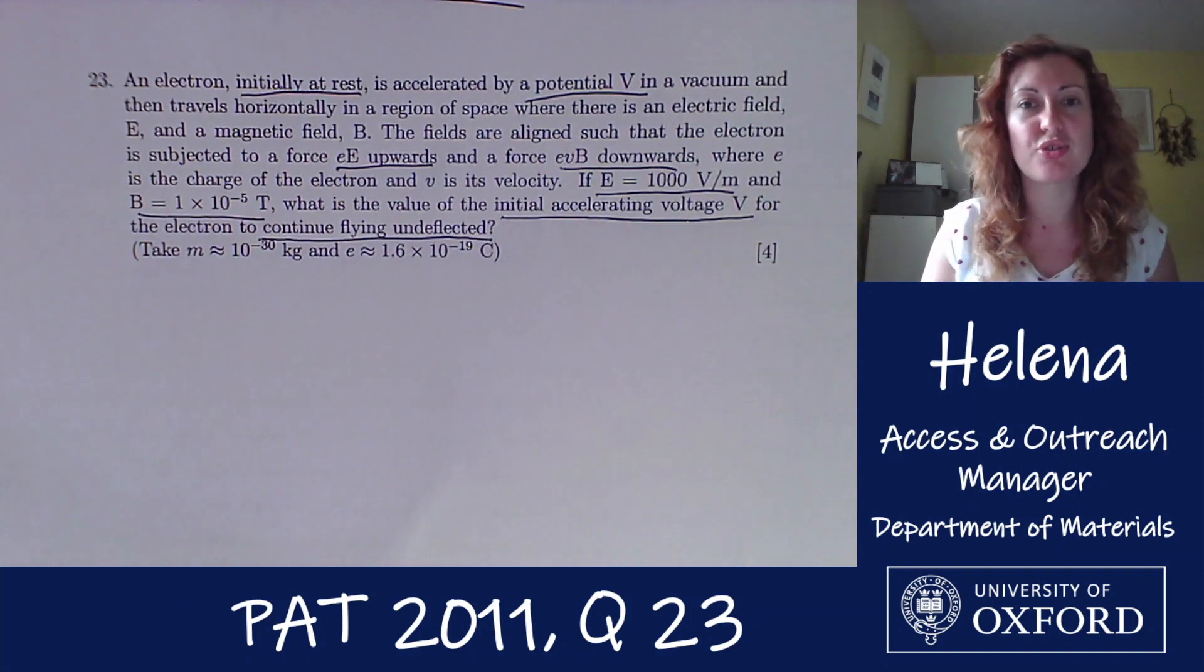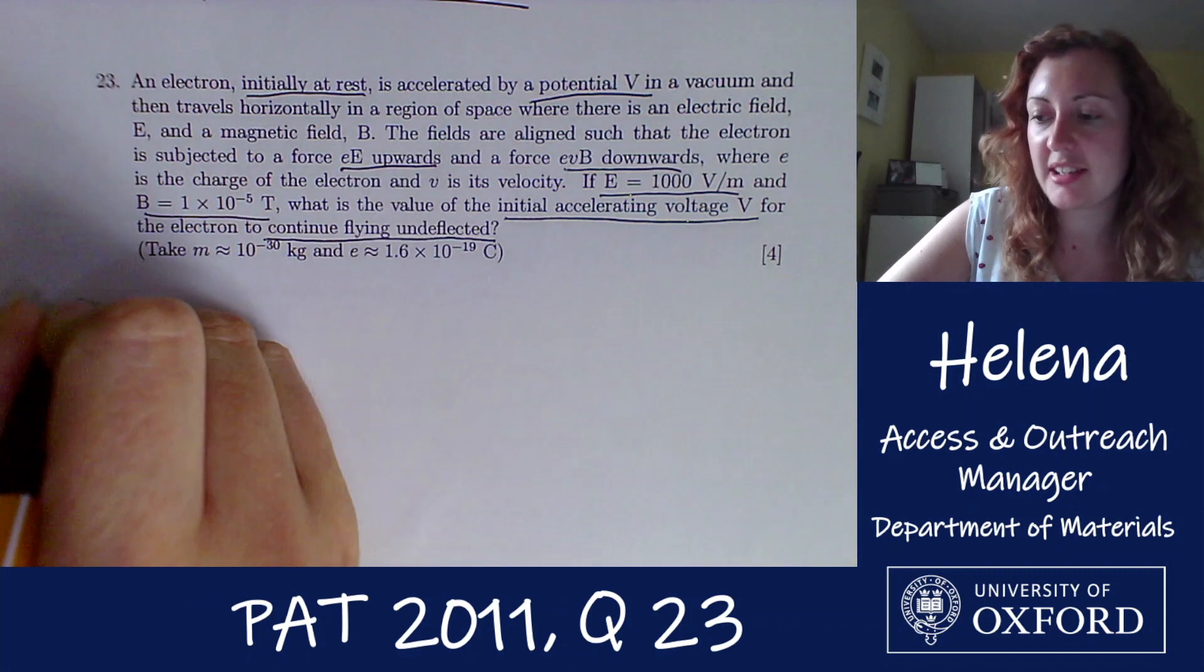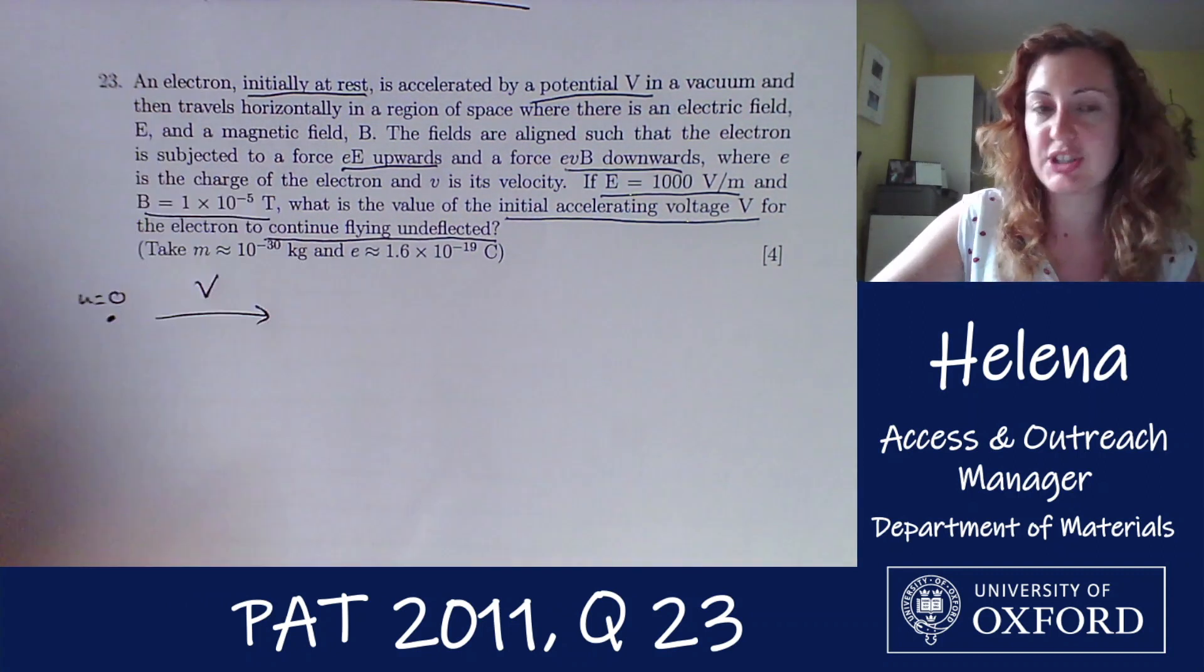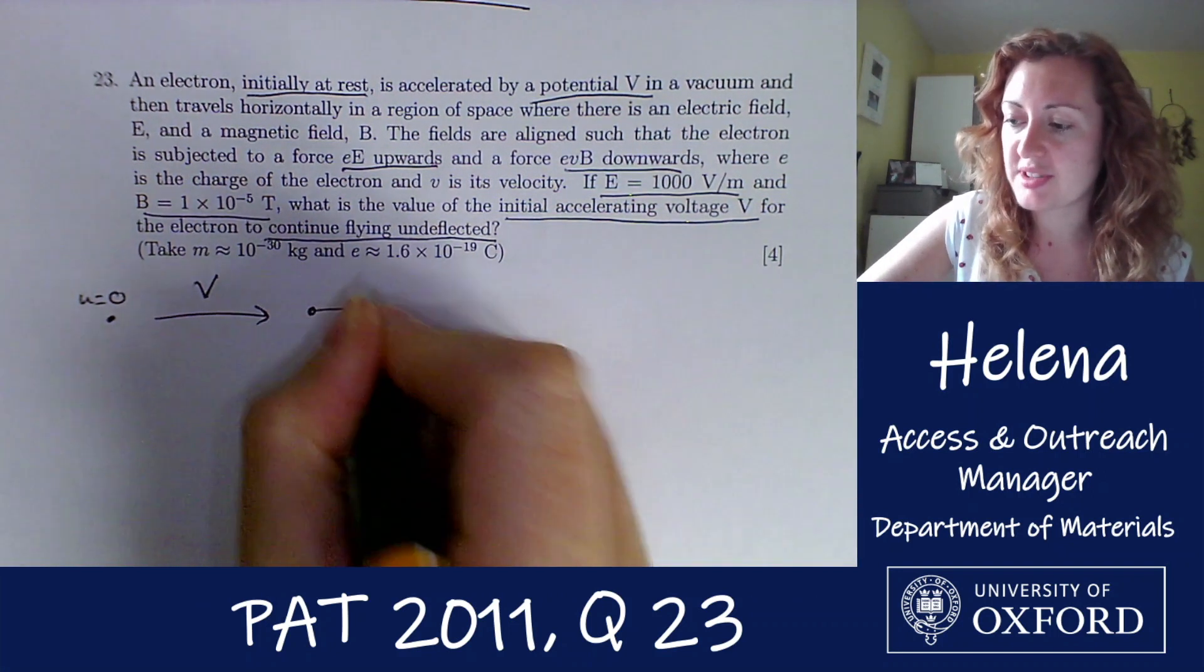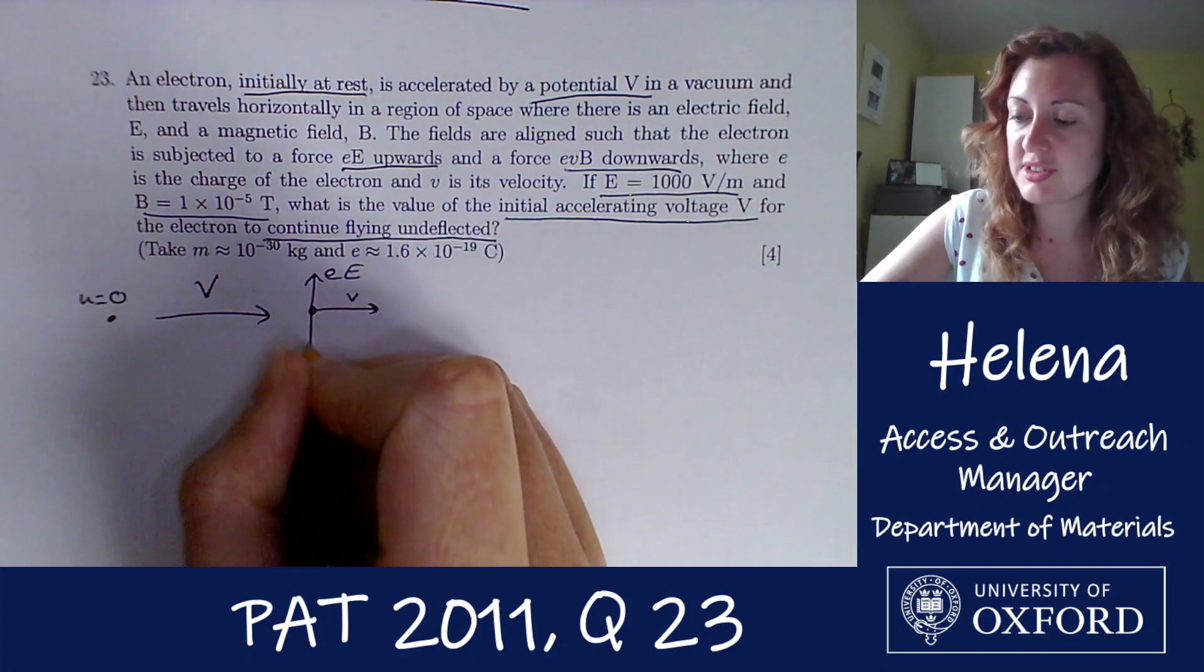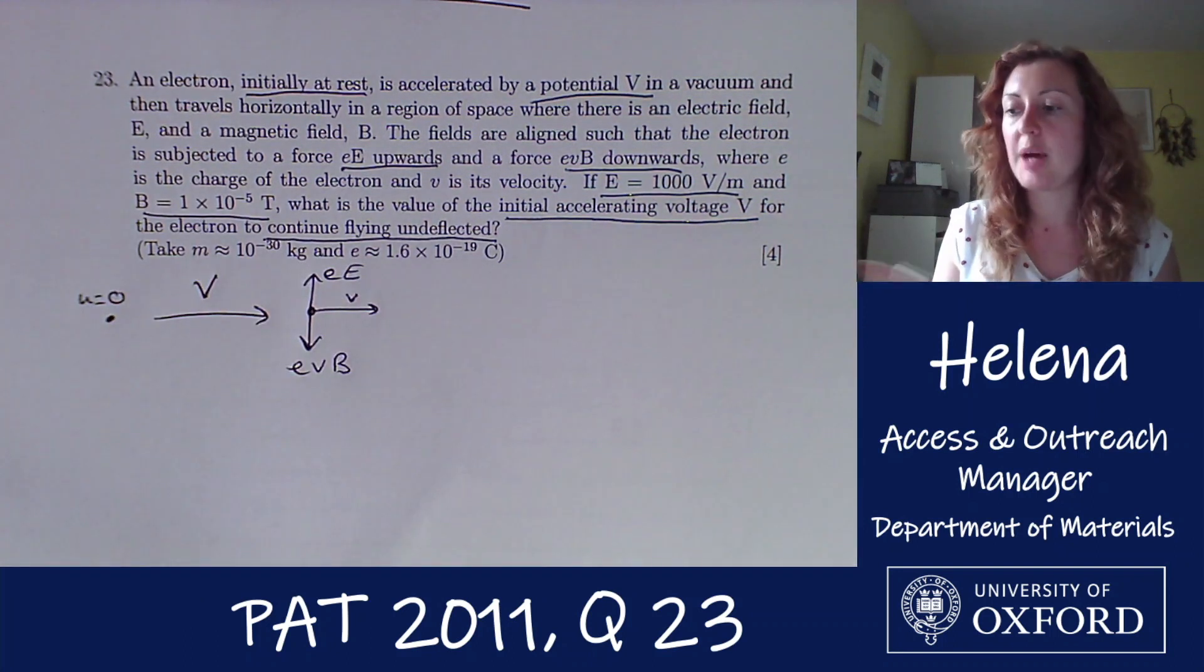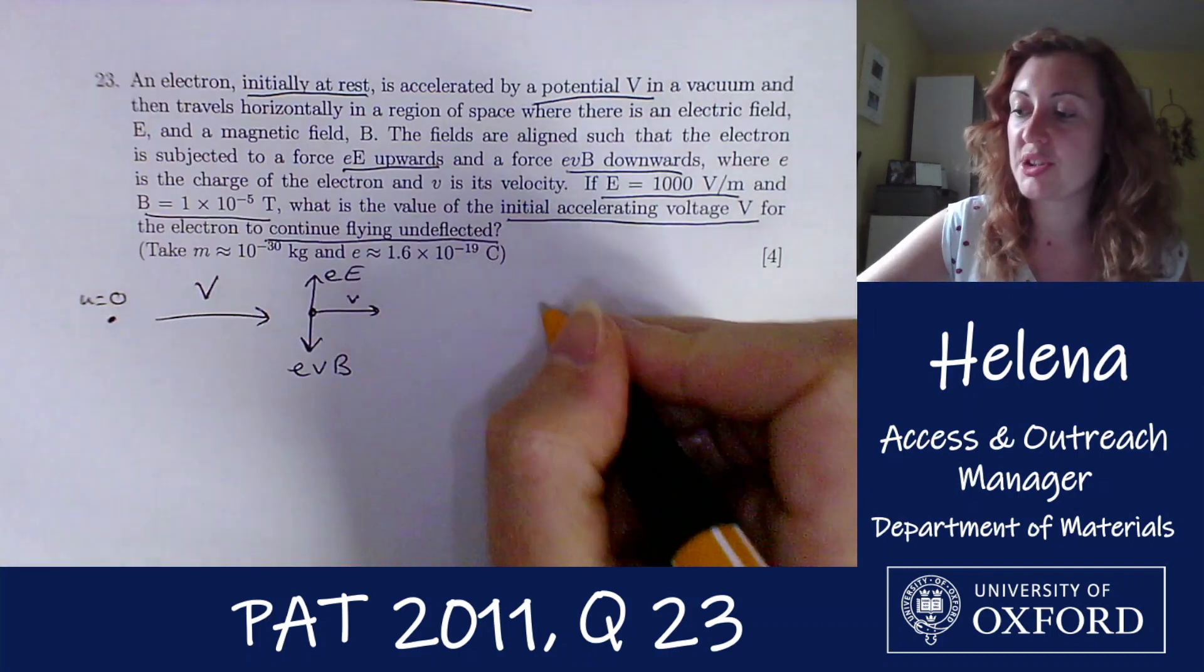So first things first, I'm going to draw myself a little sketch. We have our electron here initially at rest and accelerated through a potential V, and now we're told that it is moving horizontally in a region of space such that there's a force upwards eE and a force downwards evB. And we're also told a few other values in this question, so I'm just going to write them here.